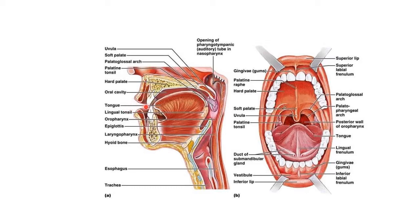When the jaws are closed, the vestibule communicates with the oral cavity proper behind the last tooth. Superiorly, inferiorly, and on the sides it is limited by the reflection of mucous membrane from the lips and cheeks to the gums. The lateral wall of the vestibule is formed by the cheek, which is composed of the buccinator muscle covered laterally by skin and medially by mucosa. The mucosa opposite the second molar tooth shows the opening of the parotid duct.